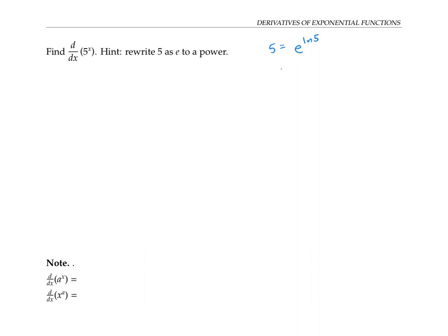This makes sense because ln five, which is the same thing as log base e of five, means the power that we raise e to in order to get five. So if we take e to the ln five, that means we raise e to the power that we raise e to to get five — and when you raise e to that power, you get five.